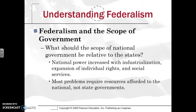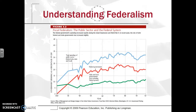Understanding federalism and its scope comes down to questions about what the scope of the national government should be relative to the states. Should the national government have more power, or should more responsibilities be given to states — as with Reagan's devolution idea? One thing that holds true is that national power has increased over time, as seen with the Civil War, the Industrial Revolution, and civil rights. Many problems require resources that states — often with only $20 to $30 billion budgets — simply cannot afford, requiring federal intervention with its trillion-dollar-level resources. Fiscal federalism spending has seen steady increases over time.